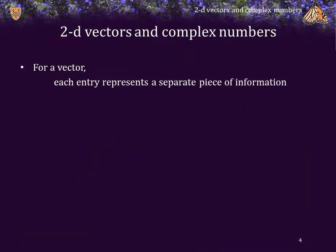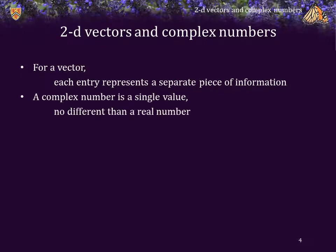For a vector, each entry represents a separate piece of independent information. A complex number, on the other hand, is a single value. It is no different than a real number, and if you start taking either the real or imaginary components, you no longer have the original number.